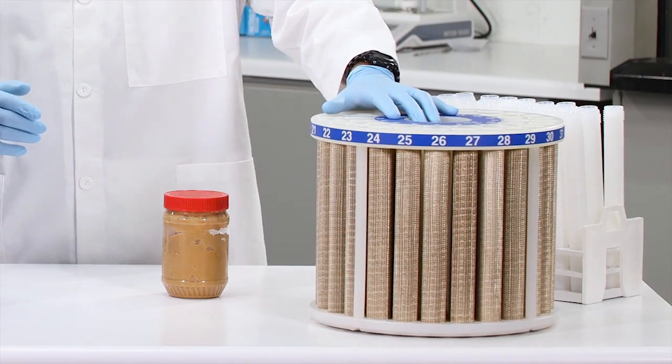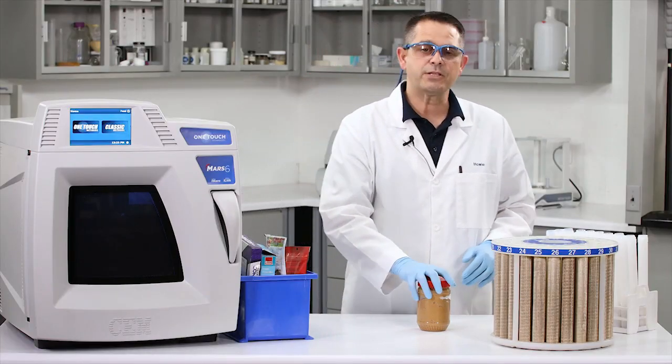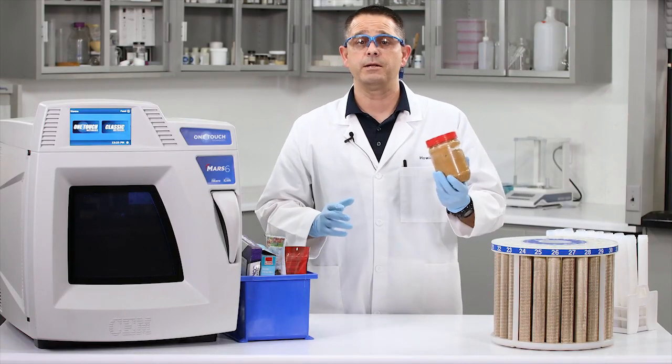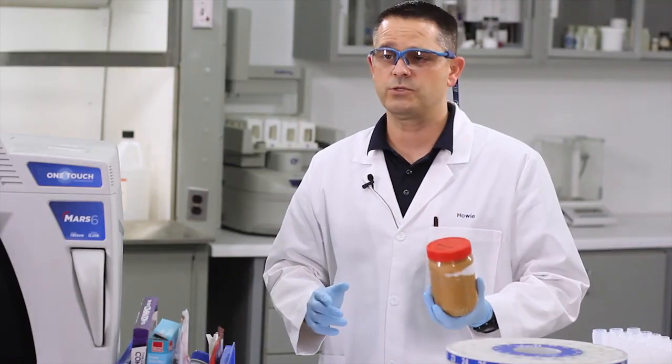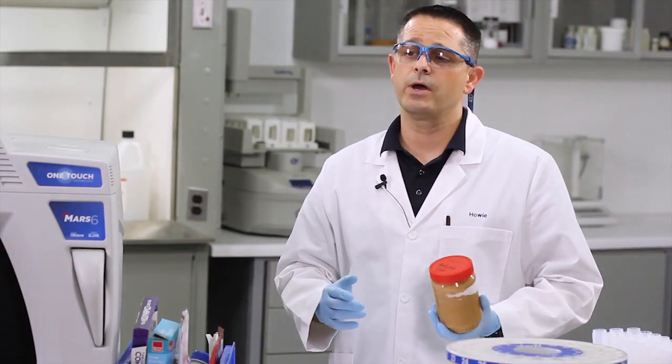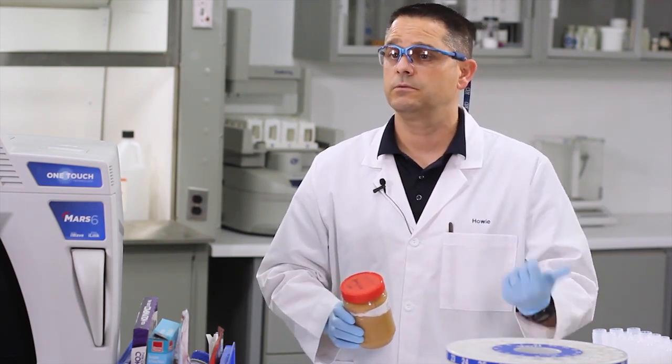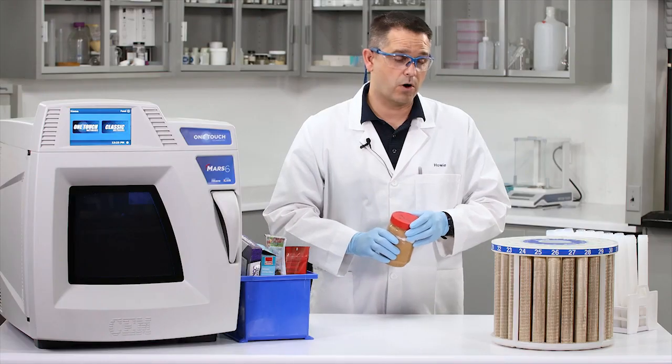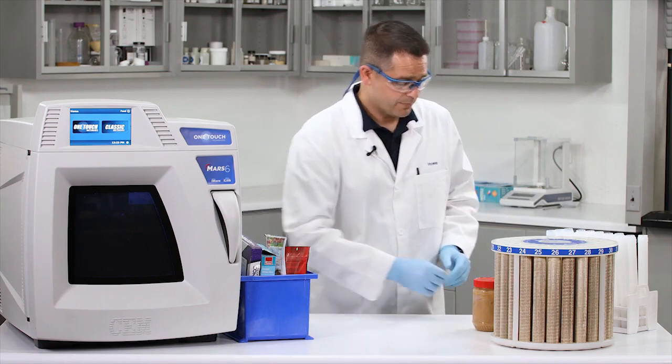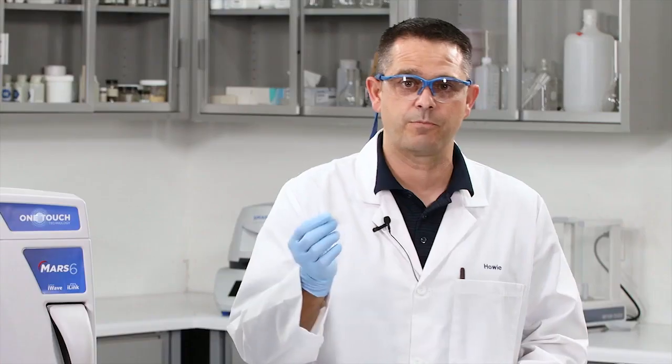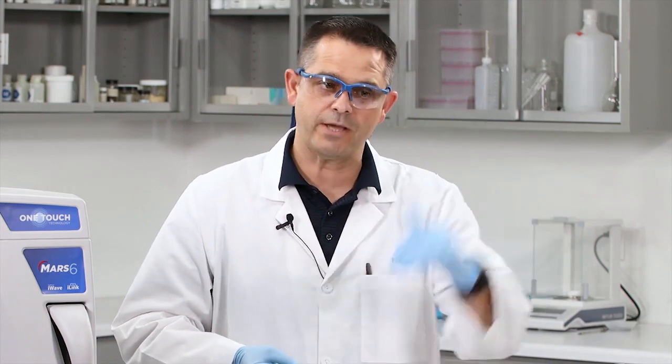As mentioned earlier, there's a couple of different ways we can do this with the peanut butter. One common way is to put the peanut butter in the freezer and then use a spatula to get it out. Today, we're going to use a cellulose filter paper and weigh it out, drop it into the vessel so we can make sure it gets all the way to the bottom.